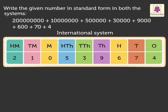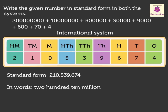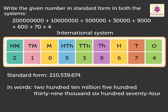Look, we found the number in standard form. That is, 210,539,674. Again, we insert the commas between two periods. We write it as 210 million 539 thousand 674 in words.